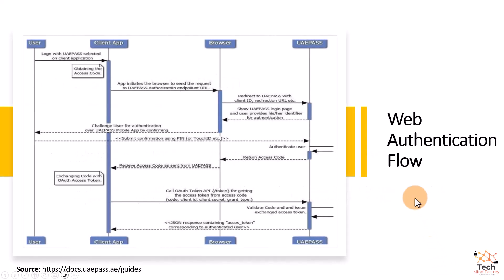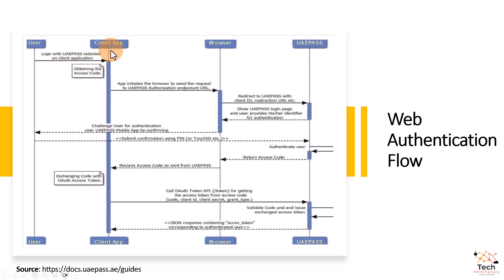Let's explain the web authentication flow. There is a user, there is a web application secured with UAE Pass available through the user's browser, and there is UAE Pass. When the user tries to access this web application, they click the login button and are redirected to the UAE Pass authorization endpoint, which is basically the login page.